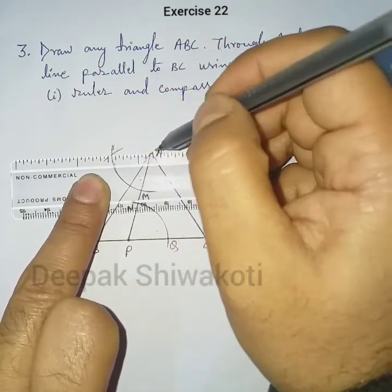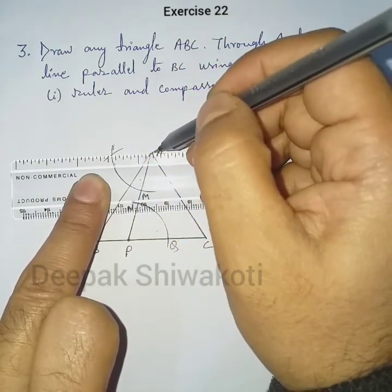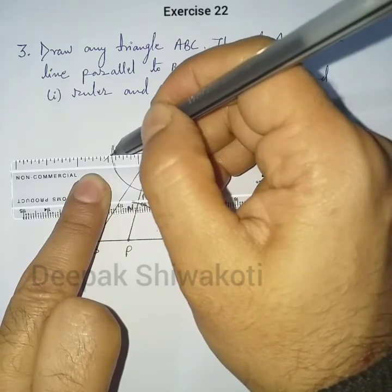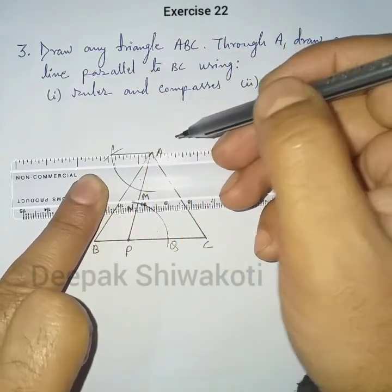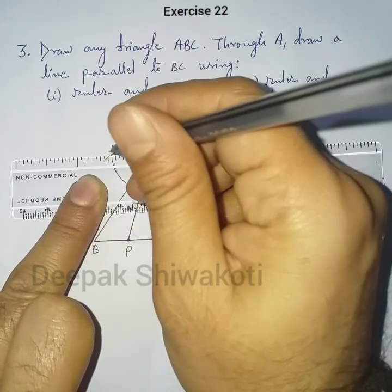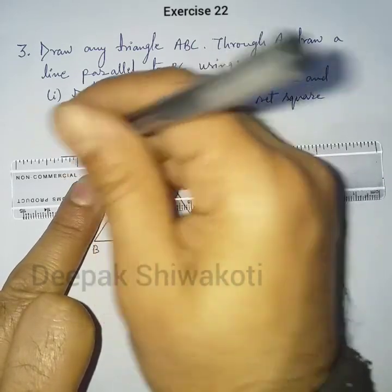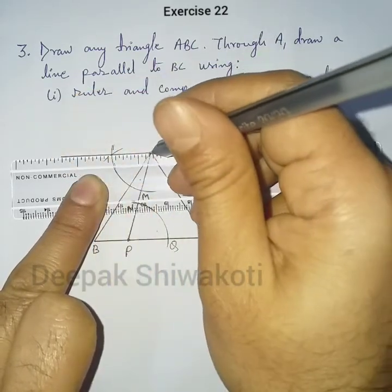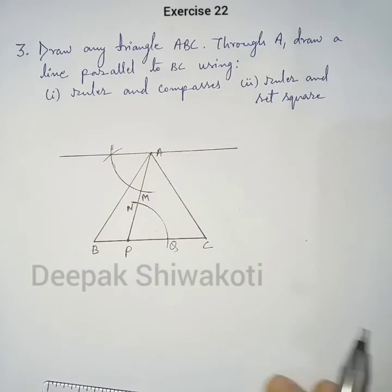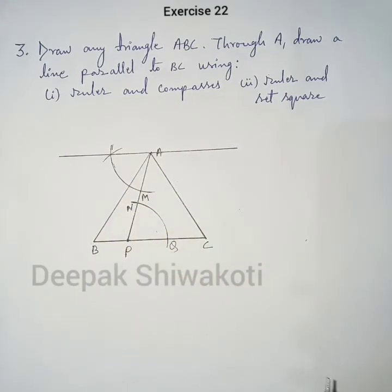Using the ruler, pass a line from this intersection to point A and extend this line. Here is the parallel line to BC.